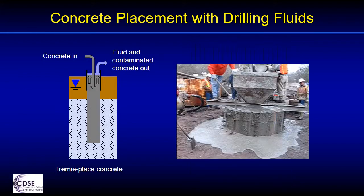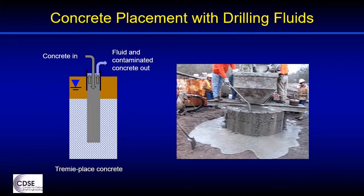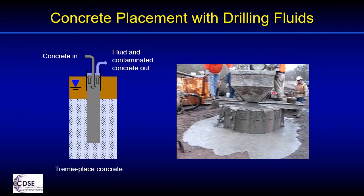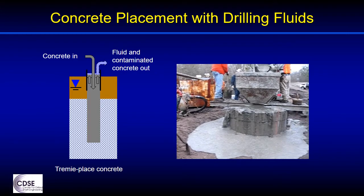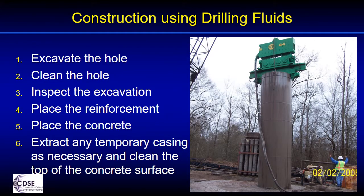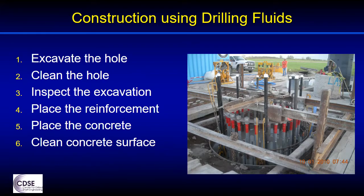As the concrete placement is completed, the top of the concrete is flushed or else dipped out so that a small amount of contaminated concrete is removed. Finally, any temporary casing is extracted as necessary. You can see the vibratory hammer extracting casing in this photo. Then clean off the top of the concrete surface in preparation for the connection to the structure.